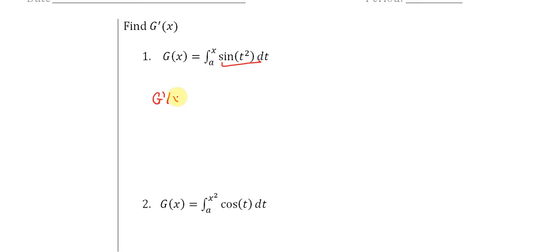So here, g prime of x, and we're assuming here that a is constant for all of these cases. Well, then g prime in this case is nothing more than sine of x squared, and that's it. That's all there is to it.